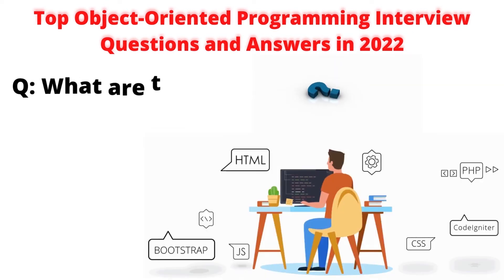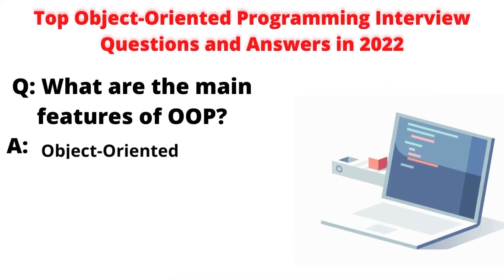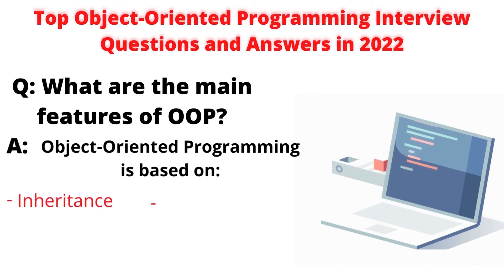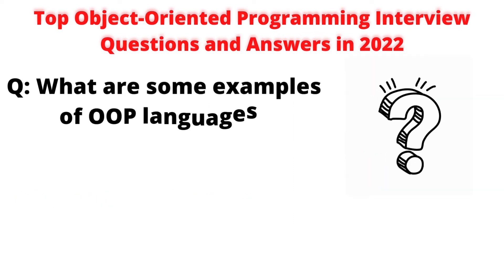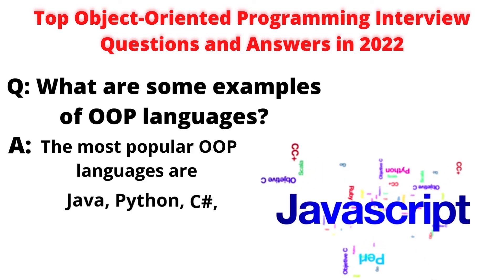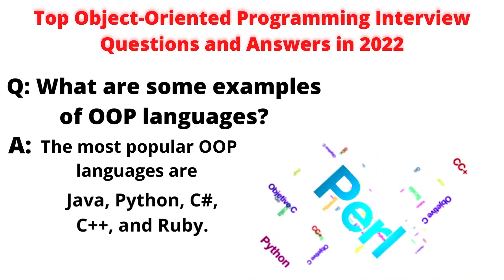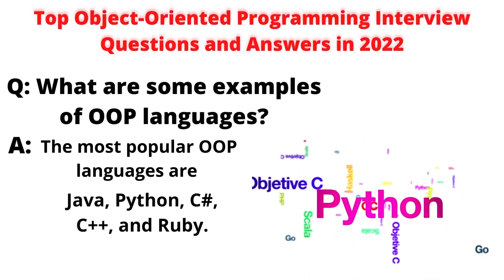Question: What are the main features of OOP? Answer: Object-oriented programming is based on inheritance, abstraction, encapsulation, and polymorphism. Question: What are some examples of OOP languages? Answer: The most popular OOP languages are Java, Python, C, C++, and Ruby. Question: What is a class in OOP? Answer: In OOP, a class is a representation of a prototype. It's a blueprint that consists of objects with different behaviors. Question: What is an object in OOP? Answer: An object is an instance of the class with unique behavior, identity, and state.